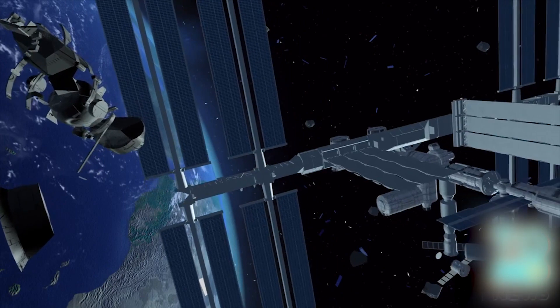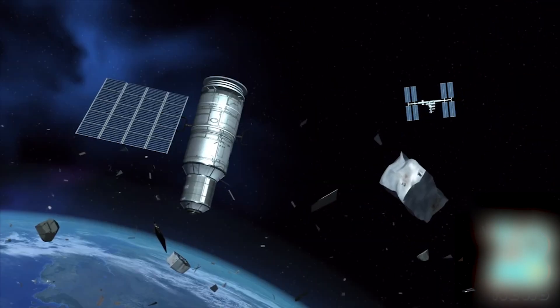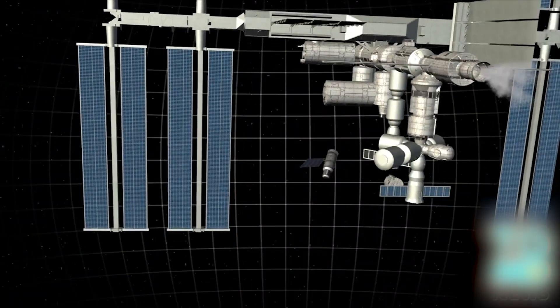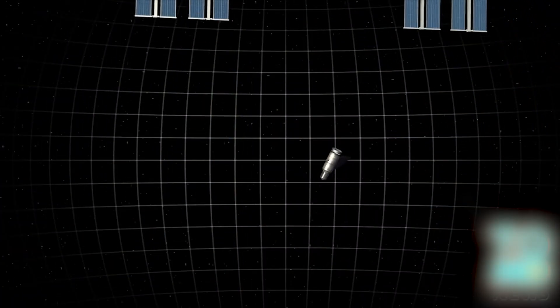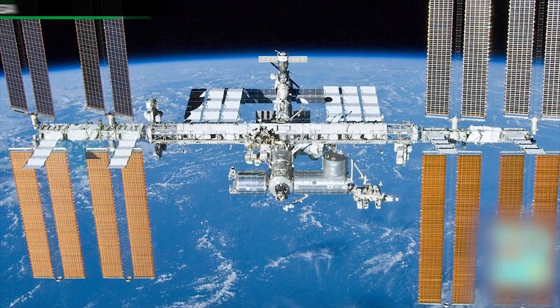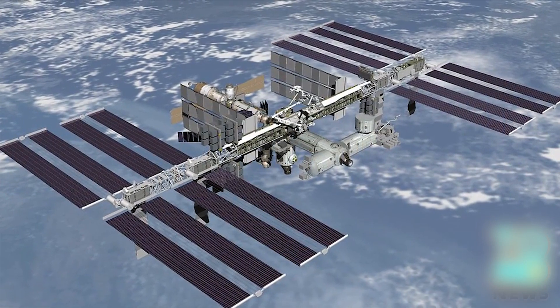The space station can only sustain collisions with fragments below one centimeter in diameter. To dodge a large fragment broken from a 1979 Russian weather satellite, the space station fired its onboard thrusters, raising its orbit by one kilometer. Mission Control says that the position change would not affect a Kazakhstan launch scheduled for next week.